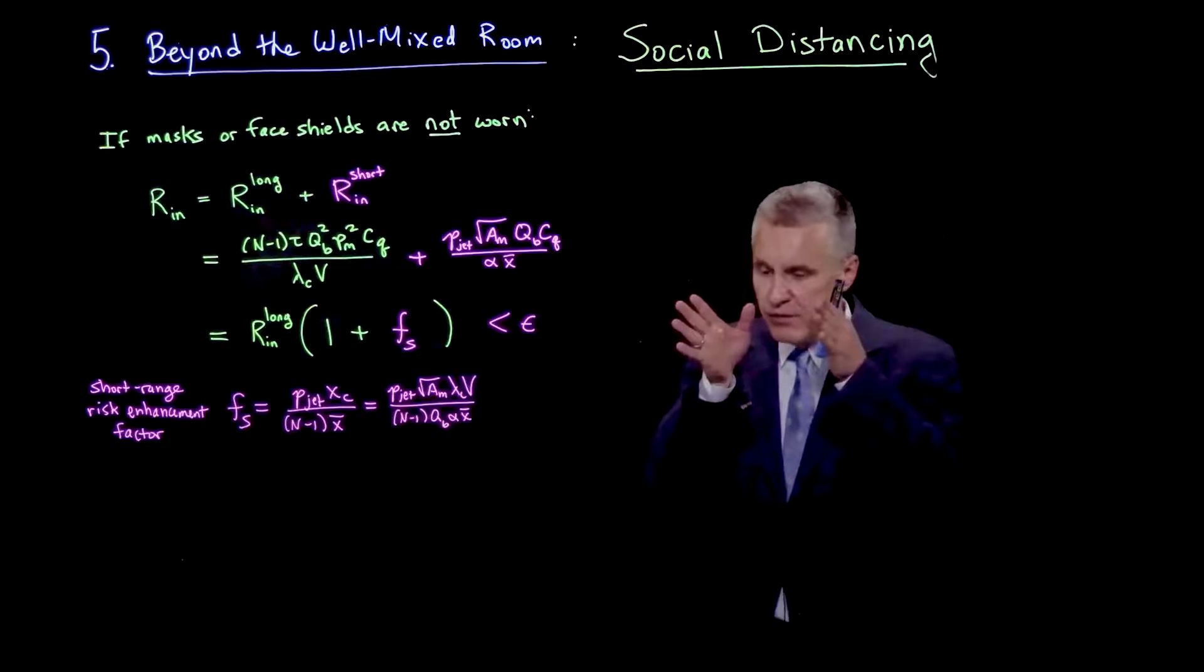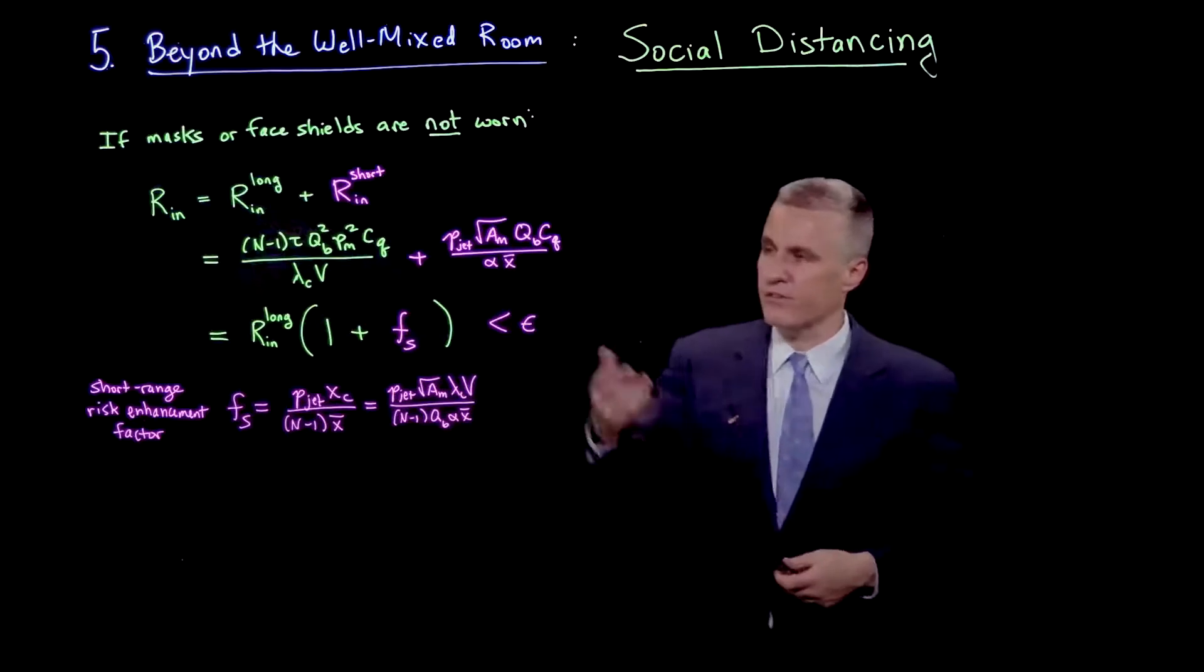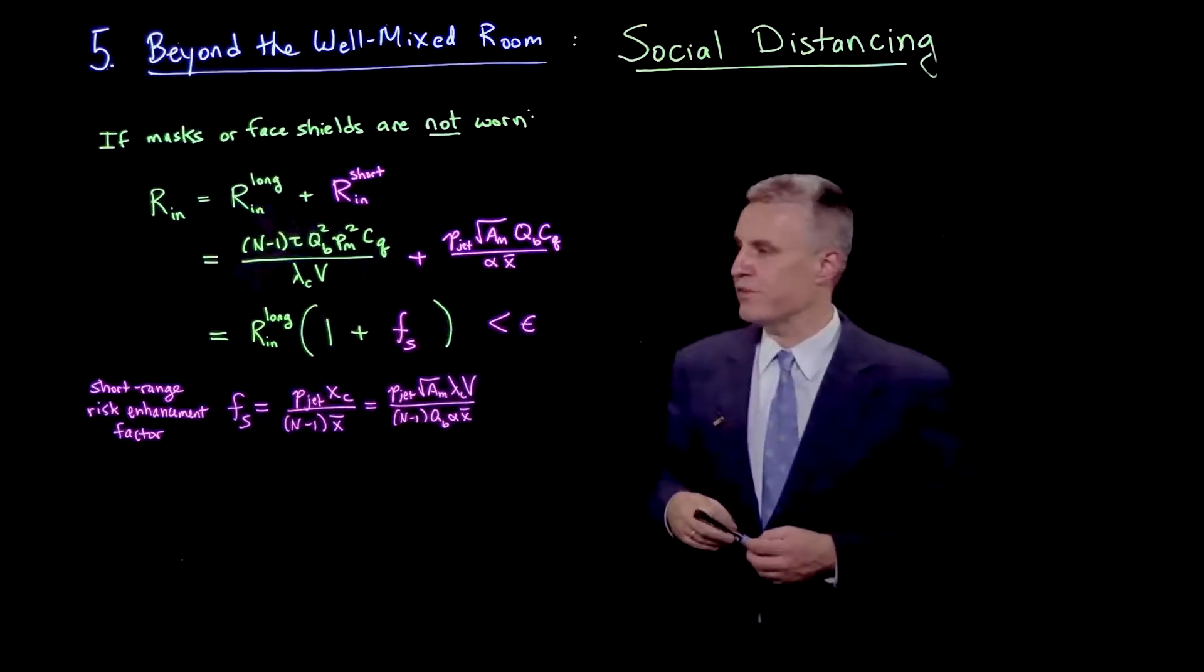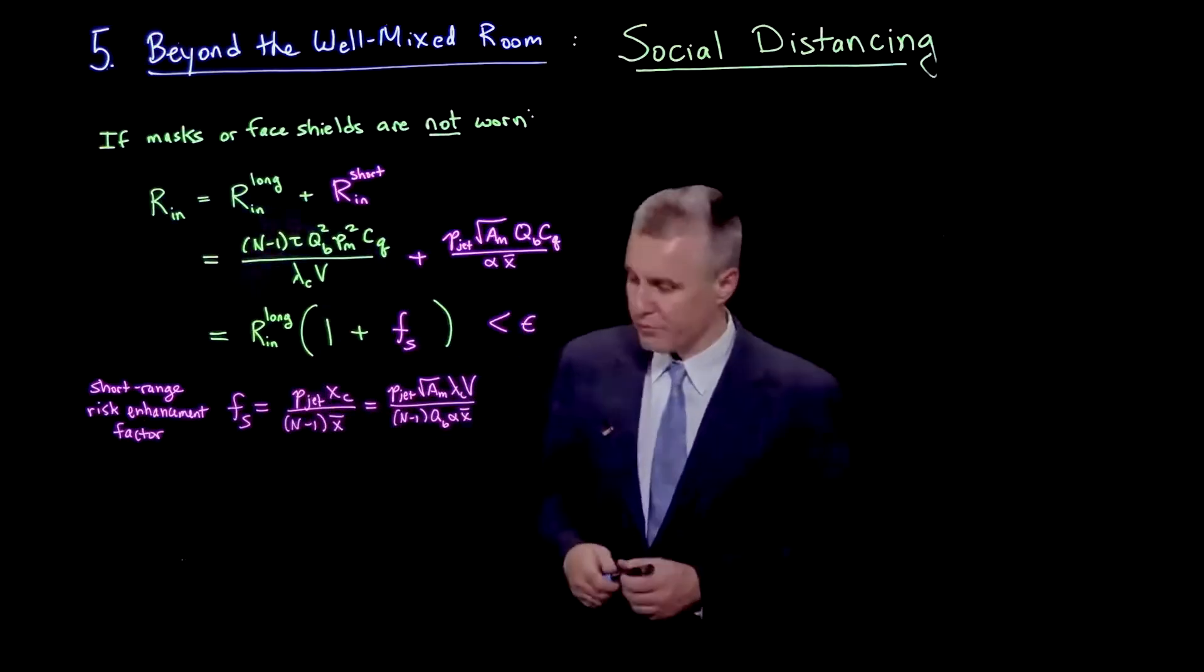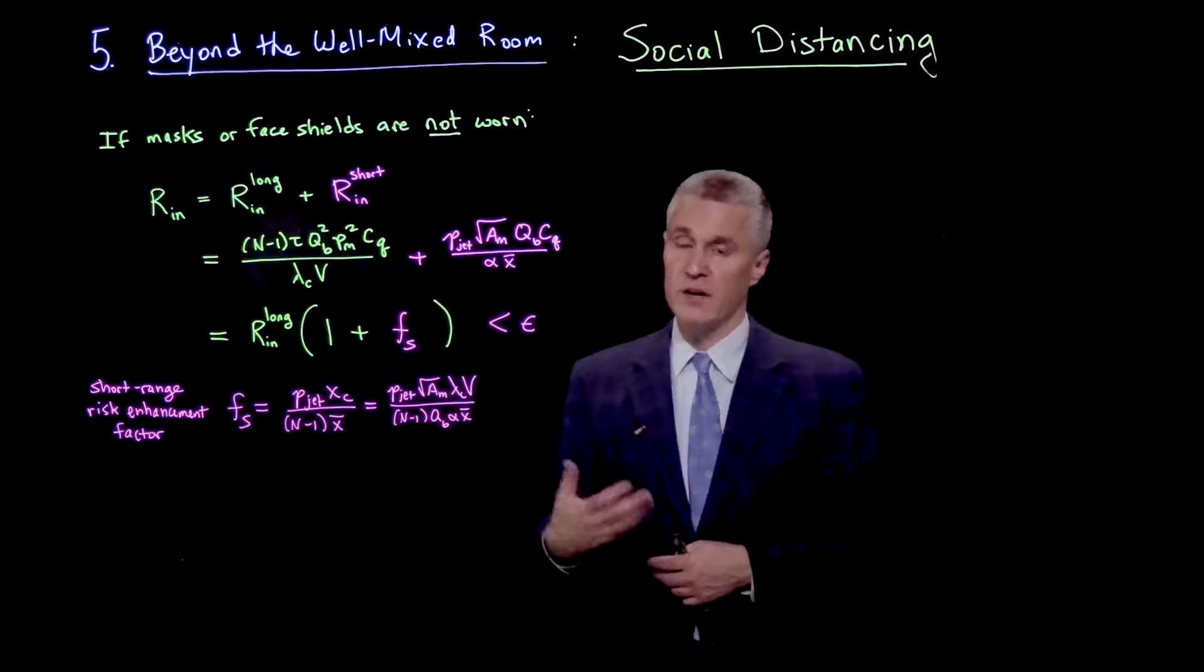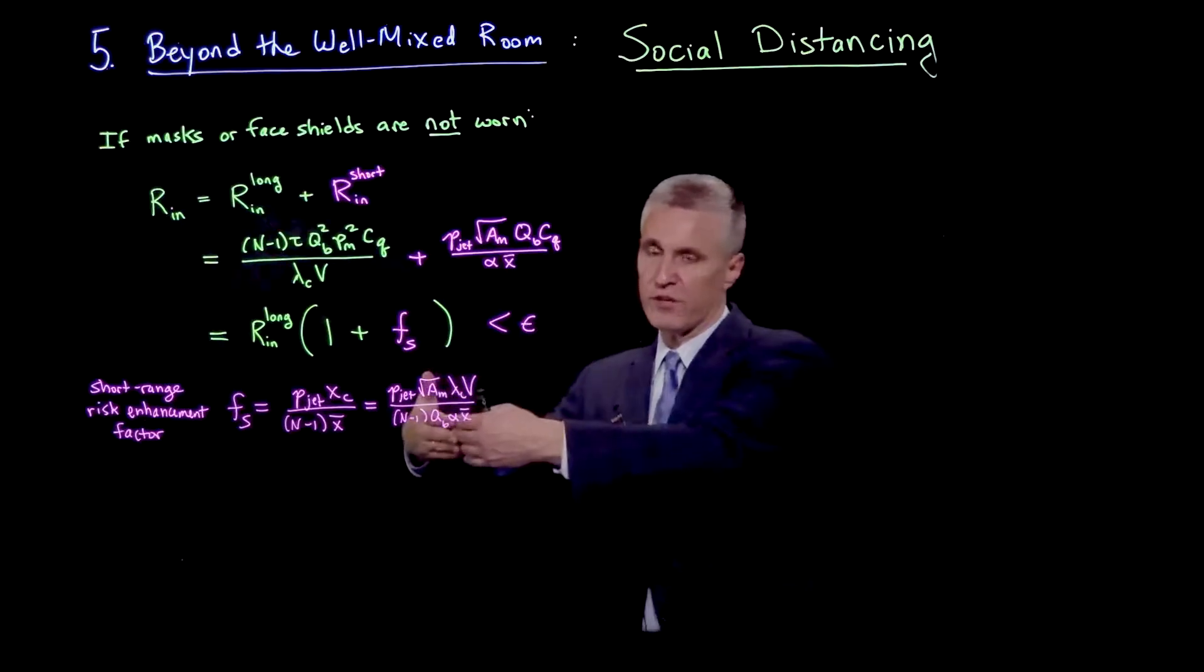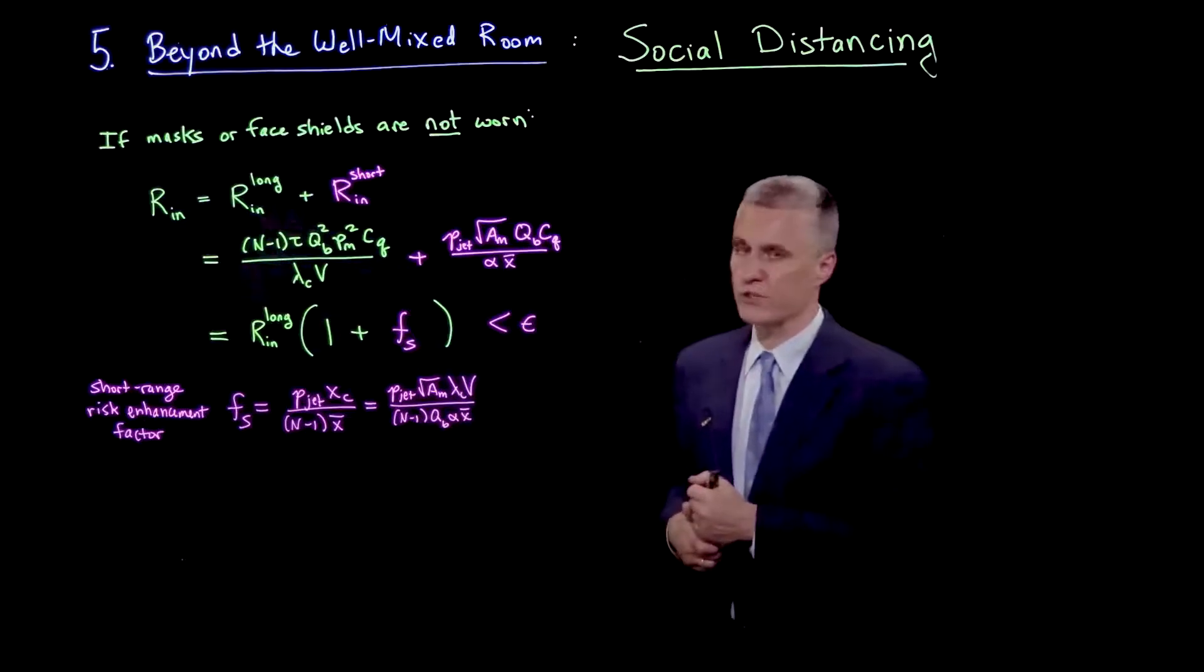But the worst-case scenario is really a well-formed respiratory jet and somebody essentially standing right in it at a certain distance, x bar, which is our average social distance. We can take the ratio of these two terms and speak of fs, which we define here as the short-range risk enhancement factor. That comes down to two new parameters: p_jet, the probability that a susceptible person is in the respiratory jet of an infected person, and x bar, the typical distance over which that occurs. xc is this transition distance, where the respiratory jet concentration starts to match that of the background ambient air.